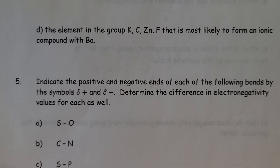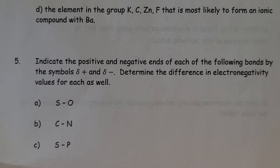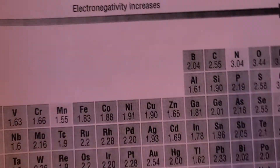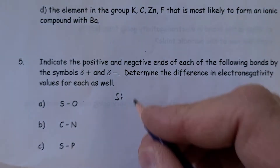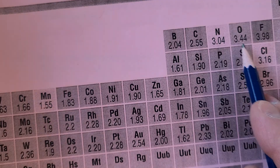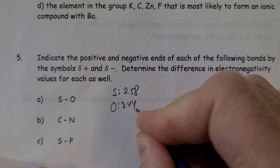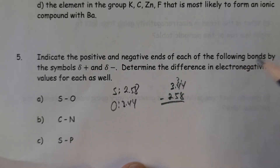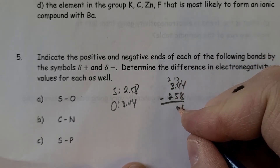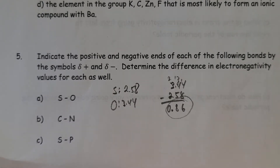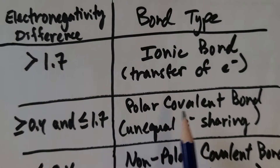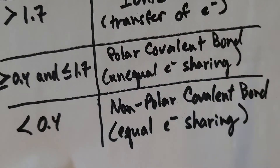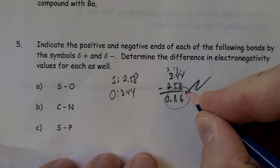The assignment also asks you to indicate the positive and negative ends of bonds and determine the difference in electronegativity. Let's look at sulfur and oxygen: sulfur has an electronegativity of 2.58 and oxygen is 3.44. Taking the larger minus the smaller: 3.44 − 2.58 = 0.86. That difference is less than 1.7 and greater than 0.4, so it's a polar covalent bond.